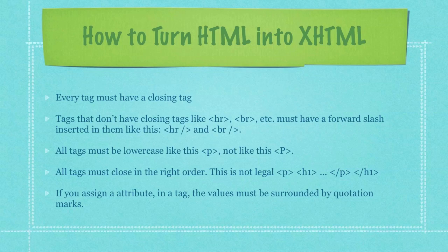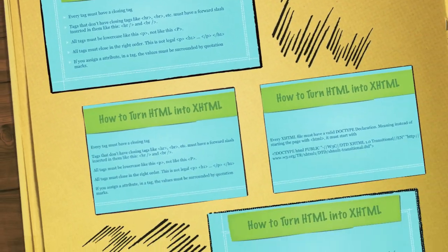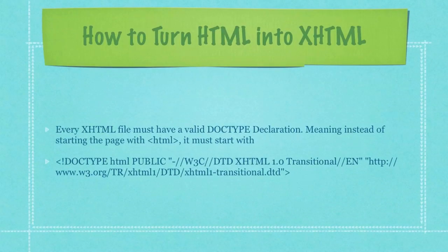For example, it would not be legal in XHTML to create a paragraph tag, then a heading tag, then close the paragraph tag before closing the heading tag. If you assign an attribute in a tag, the values must be surrounded by quotation marks. Also, every XHTML file must have a valid doctype declaration, meaning instead of starting the page with a plain HTML tag, it must start with an HTML tag that resembles what I show here as an example.